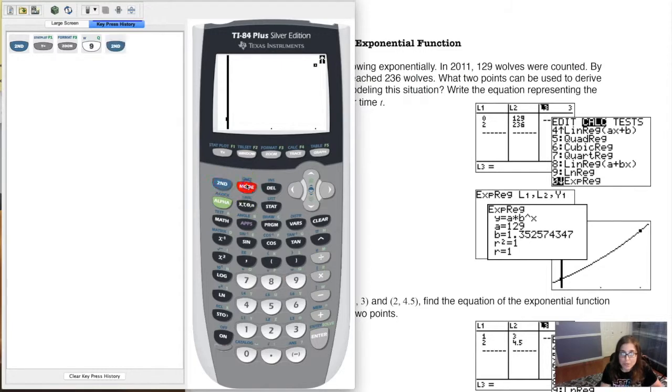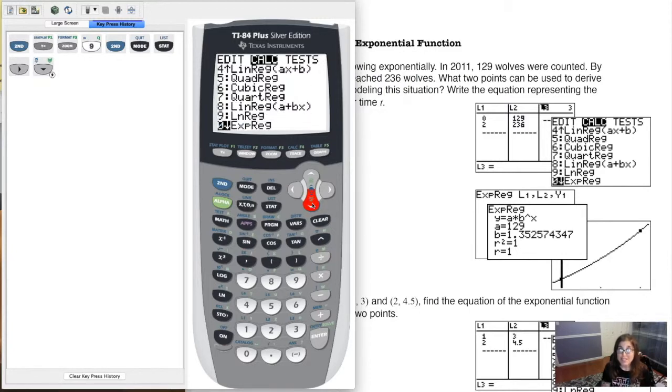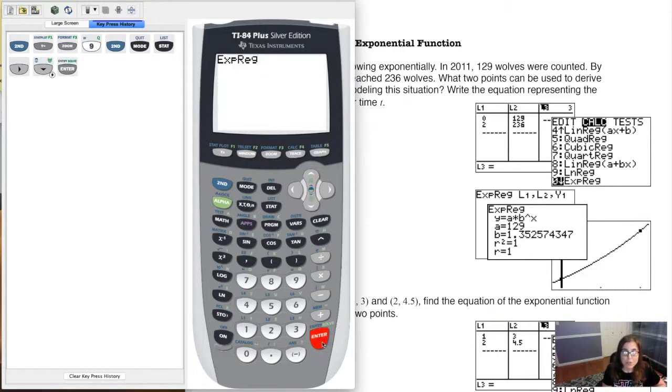So here we go. Let me go back to my home screen, second mode. Let's hit stat. We'll go over to calc. Now we've done linear regression, quadratic, cubic, quartic. But if you keep scrolling down, and you have to scroll all the way down to zero. Wait for it. There it is. There's exponential regression. So let's opt for exponential regression.